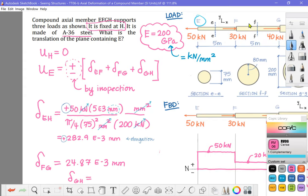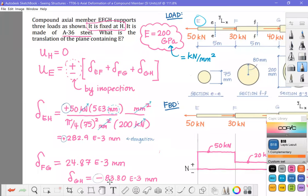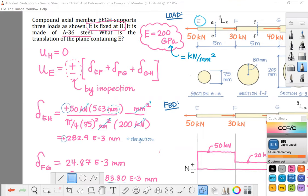And then we also need to figure out the deformation in piece GH. And that is a negative 83.80 E-3 millimeters. It's negative because the internal force is negative. All right.